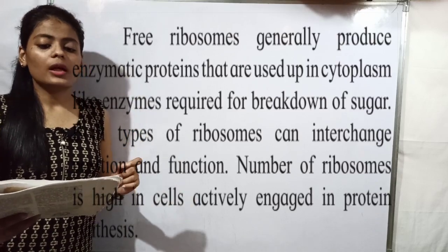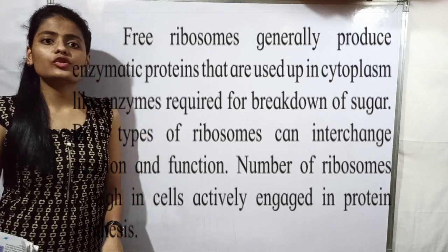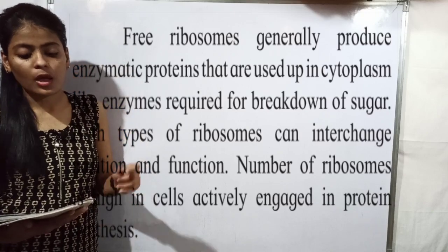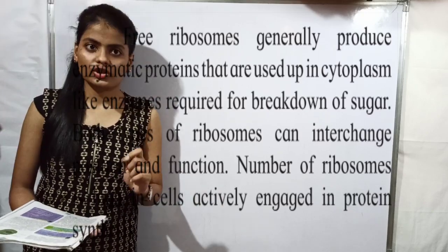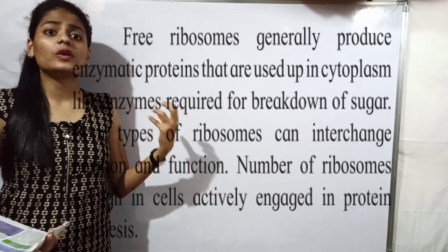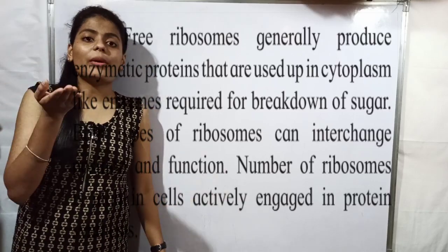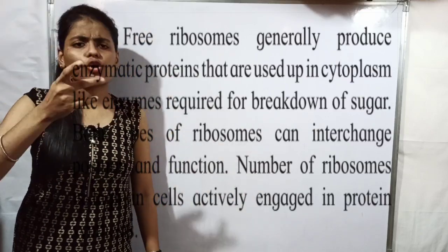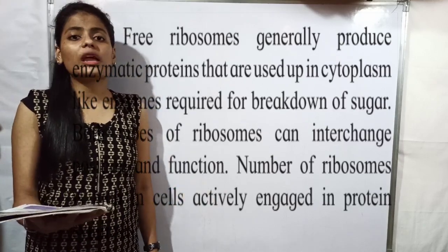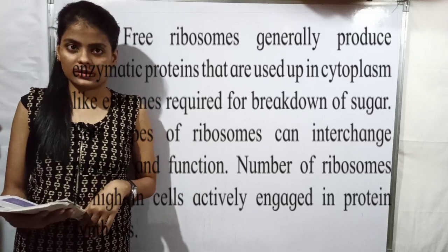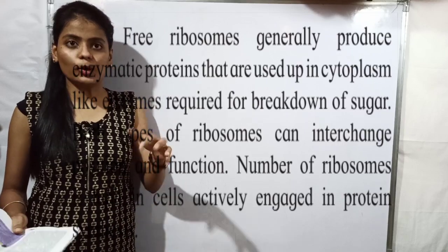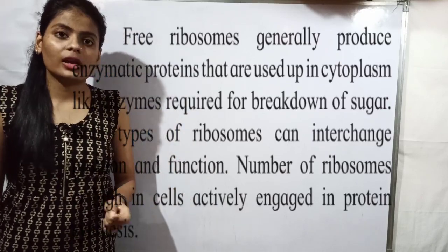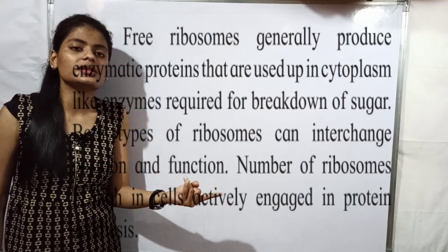Free ribosomes generally produce enzymatic proteins that are used in the cytoplasm, such as enzymes required for the breakdown of sugar. Both types of ribosomes — bound and free — can interchange their position and function as per the requirement. The number of ribosomes is higher in cells that are actively engaged in protein synthesis, as those cells have greater need for ribosomal activity.